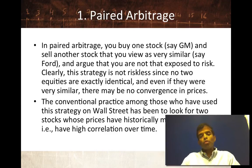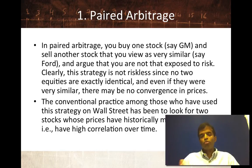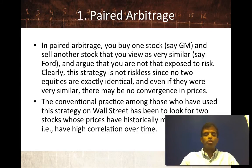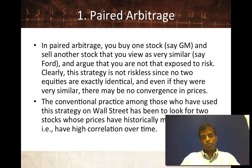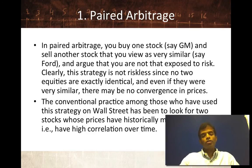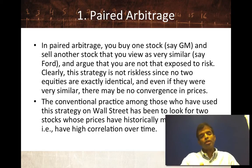The first example is called paired arbitrage. You find two companies that historically have moved together. Take GM and Ford — they're both automobile stocks with a long history, and over time they've tended to move in the same direction. Assume you look at 80 years of history and discover that Ford shares trade at roughly twice what GM shares trade for, and Ford's P/E ratio is roughly one and a half times GM's P/E ratio. You use that long history as your starting point. If the actual price difference between the two diverges from that historical relationship, you buy the cheaper one and sell the more expensive one, hoping history reasserts itself.